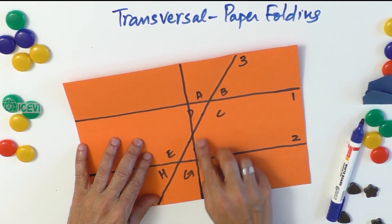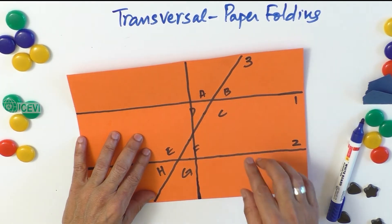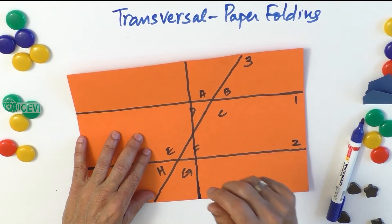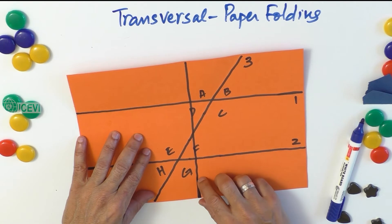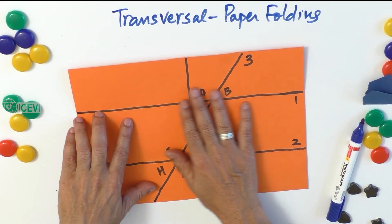And how all the angles, you know, exterior, interior, vertically opposite, consecutive angles, all these angles, how they are the same. This concept can be developed in the child.